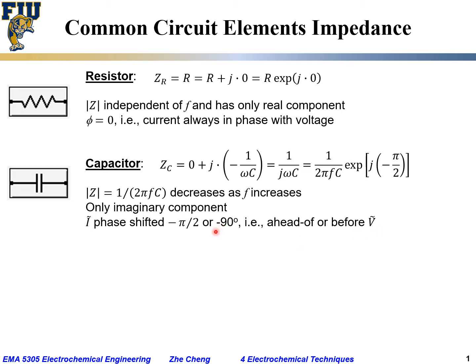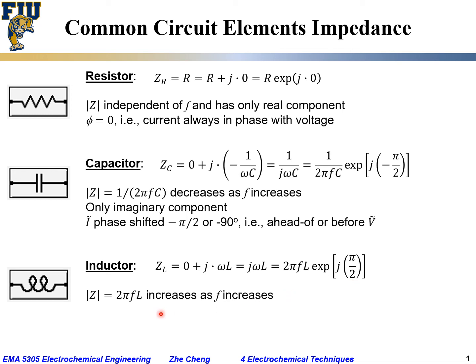And finally, for inductor - the impedance for inductor L would be 0 for the real part plus j omega L. Omega, again, would be radio frequency. And if you omit the real part, it would be just j omega L. If you wanted to write it in exponential form, omega L would be 2 pi f L, and then the j term would be exp of j times half pi. So the modulus or magnitude for impedance in this case would be 2 pi f L, and the modulus increases as frequency increases.